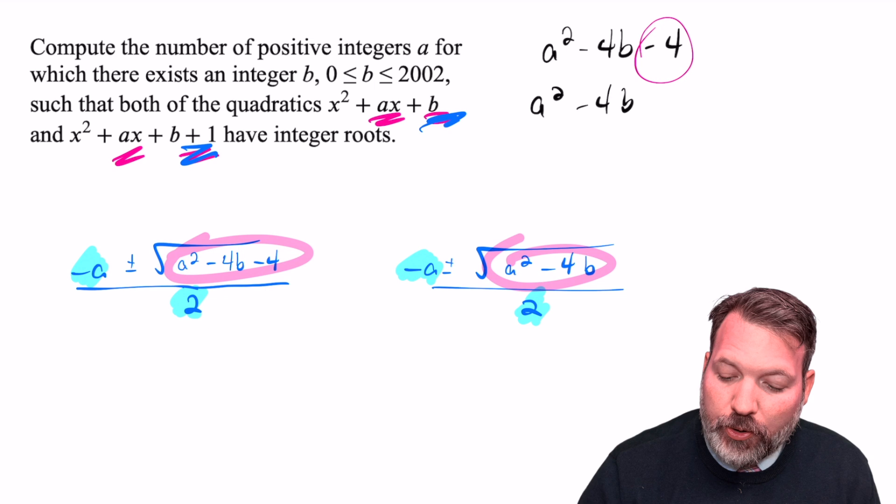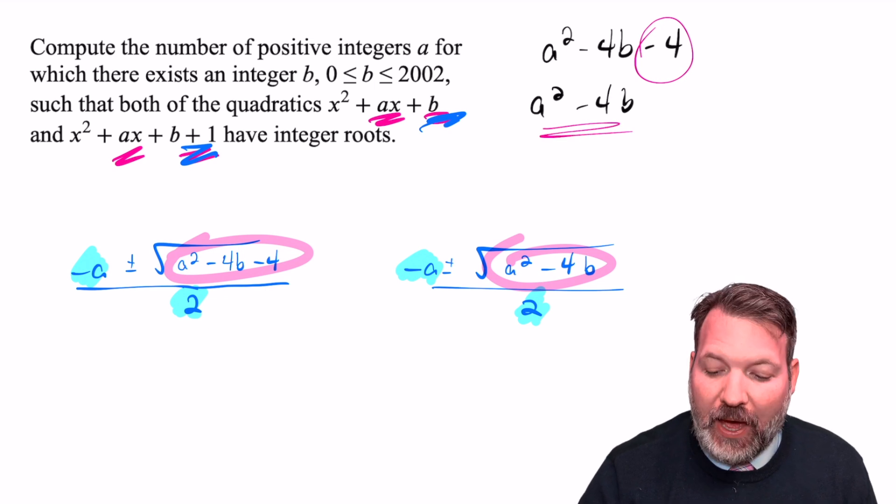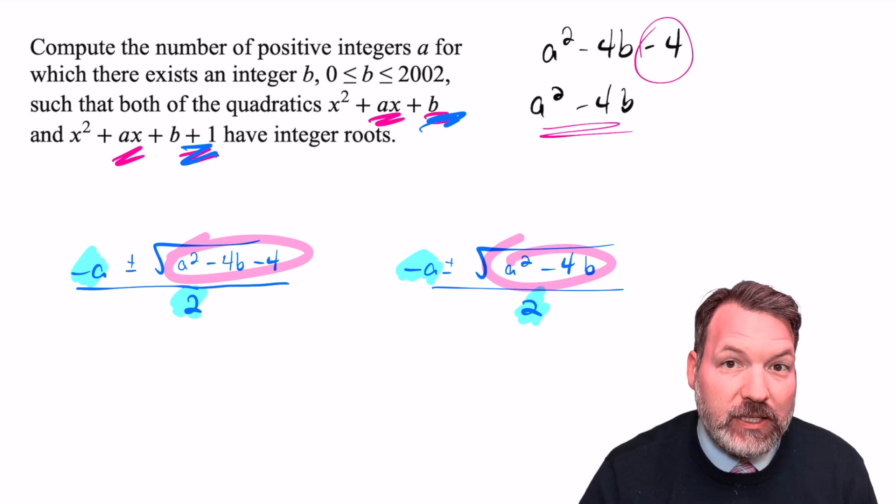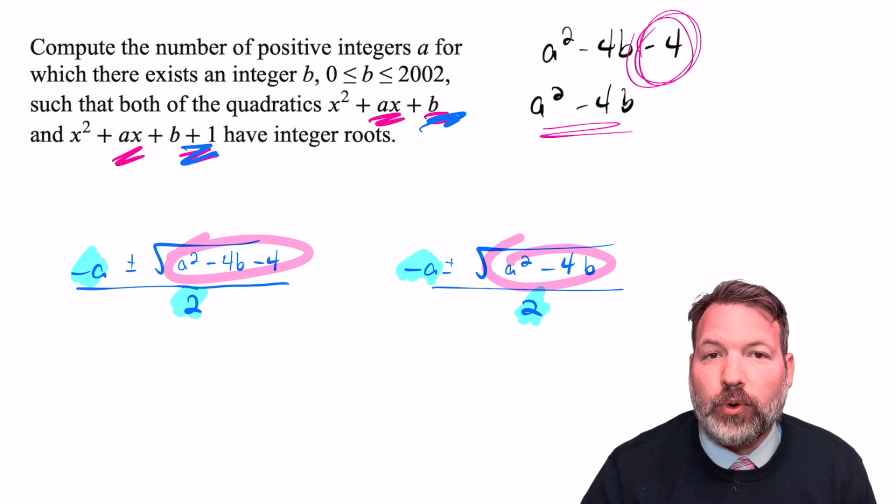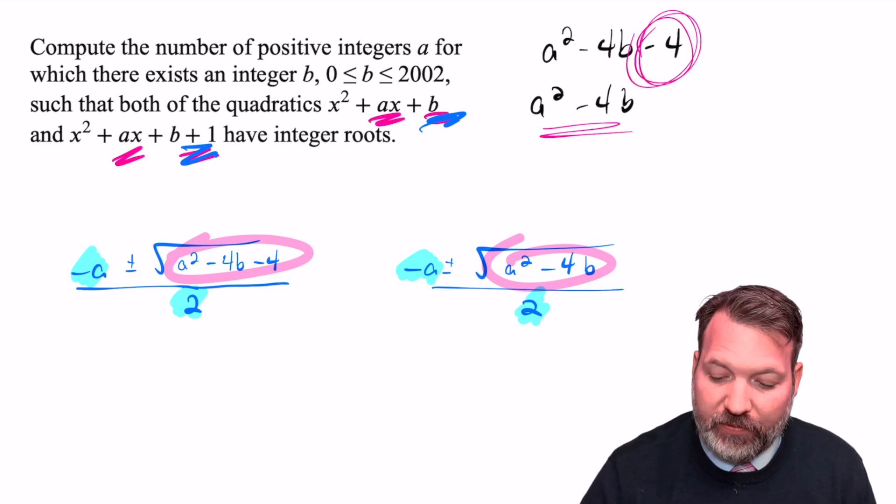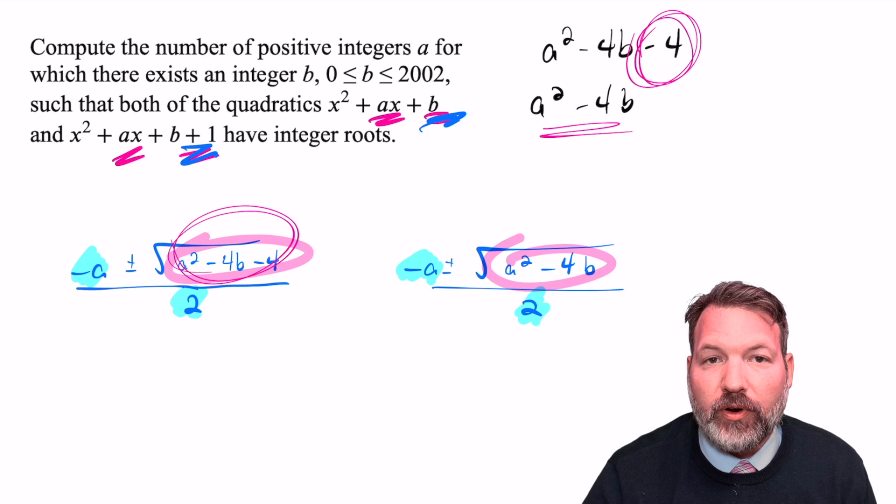Since clearly we want to take the square root of a positive number, we want to let the A² - 4B be at least 4 so that when we subtract 4 away from it, we get another positive number that we can take the square root of over here to get those integer roots that we need.